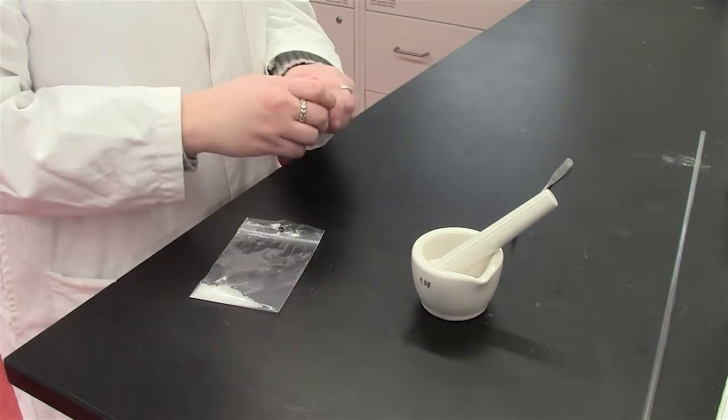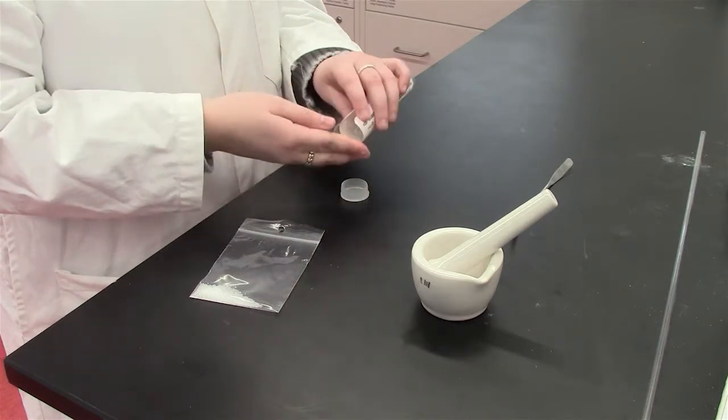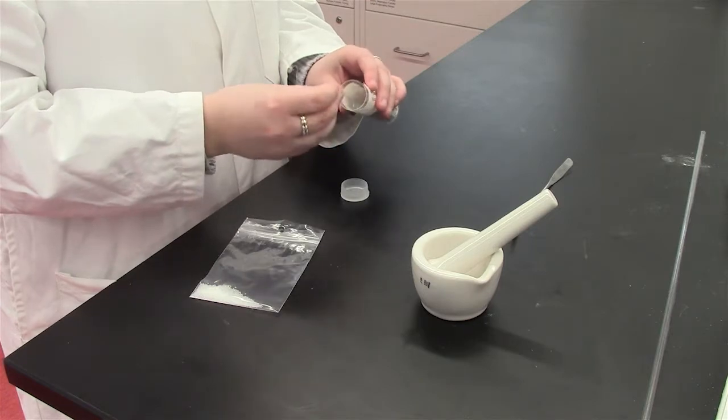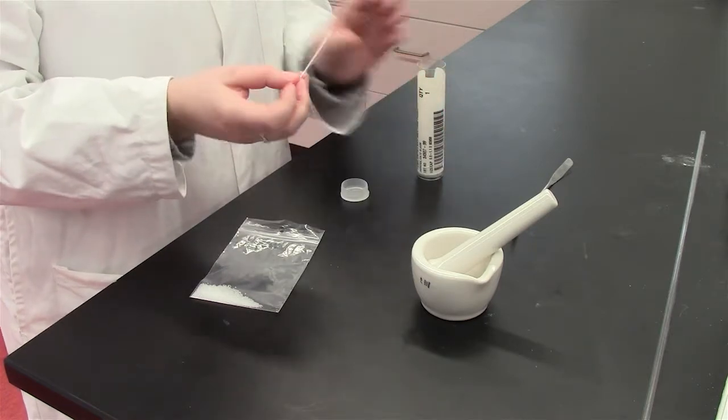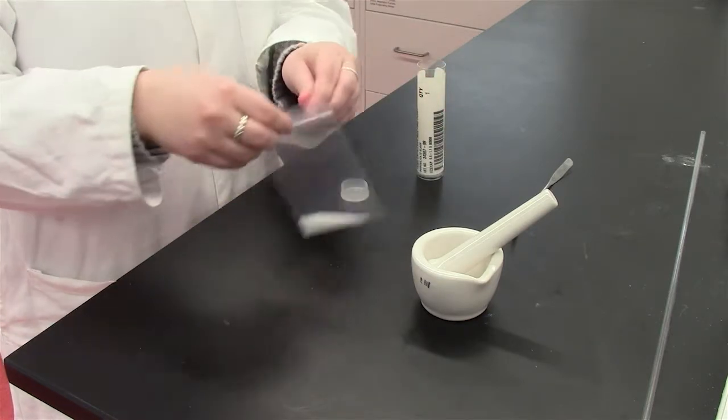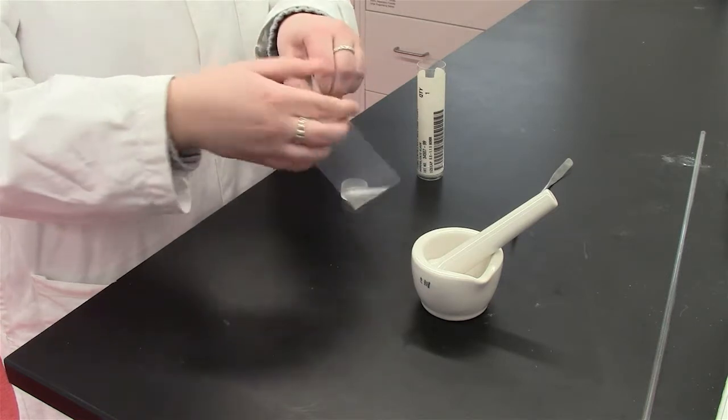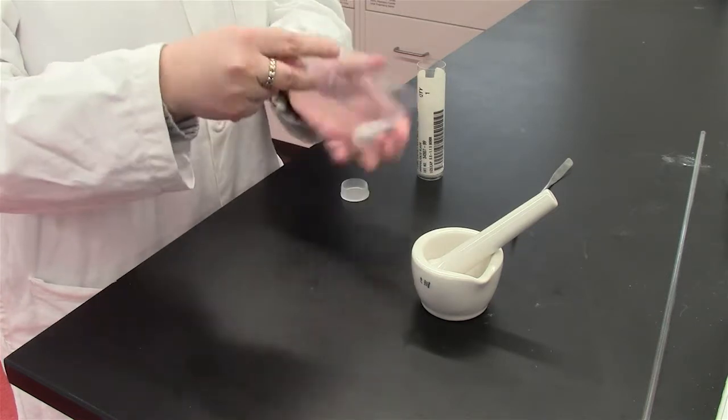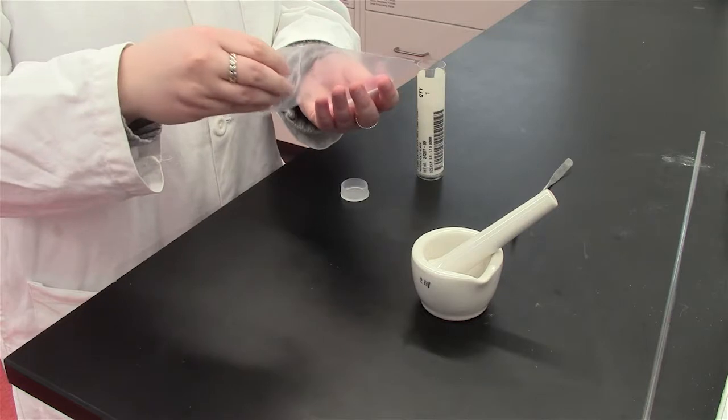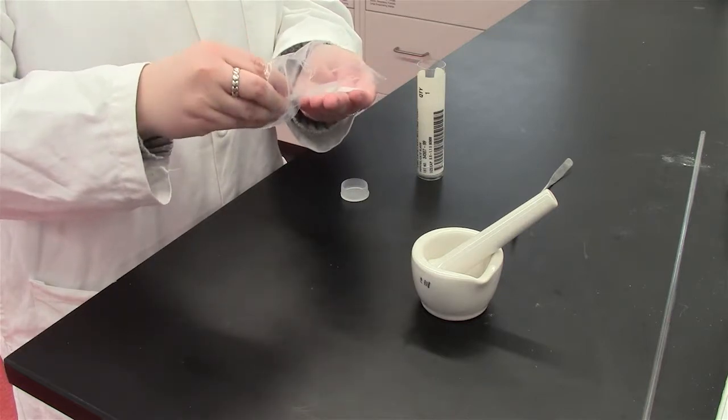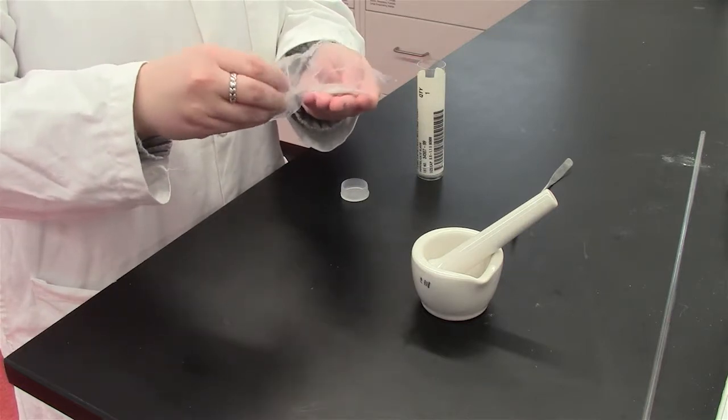Take a sample of your solid out of your sample bag that has been given to you by your TA. Using the capillary tube, obtain a small quantity of the fine powder by gently rolling the tube through the substance.